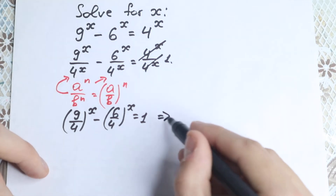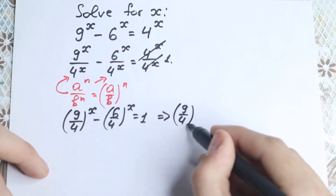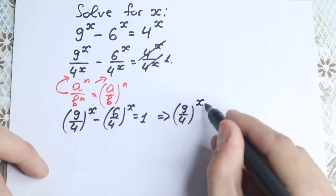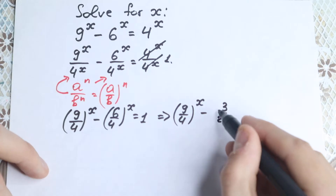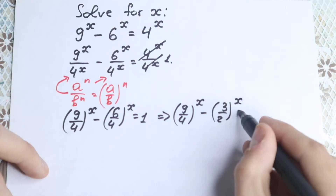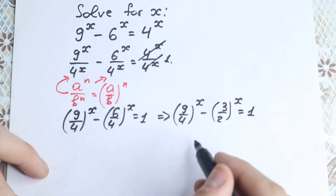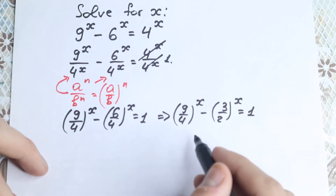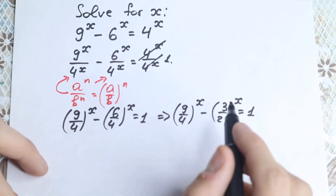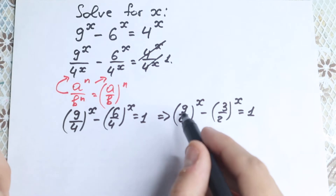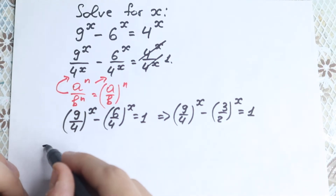So we have 9 over 4, to the power x, minus 3 over 2, to the power x, equal to 1. Now looking closely at 9 over 4 and 3 over 2, we can easily write 9 as 3 squared.